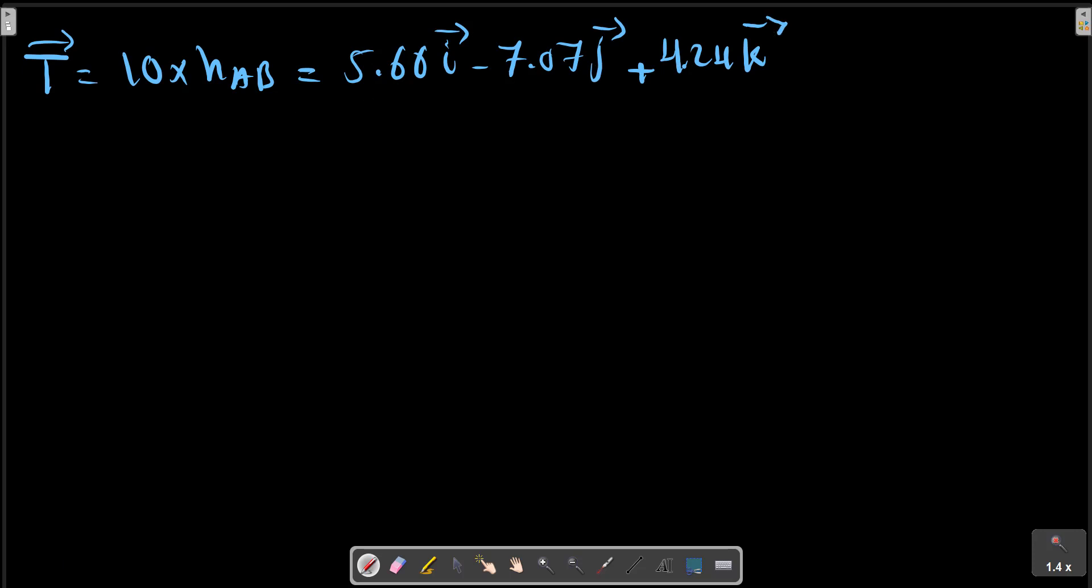Okay, MO equals ROA cross T. ROA is (0, 50, 0).